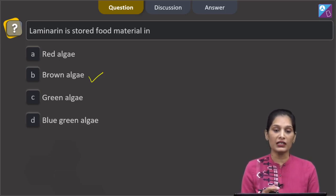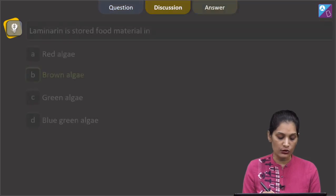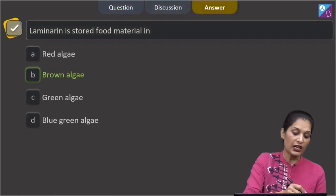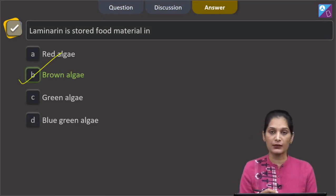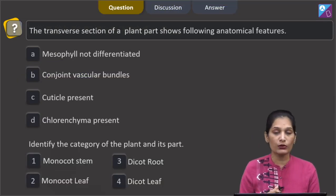it is the cyanophycean starch. So laminarin is stored food material in case of brown algae. So the correct option for the given question is B that is brown algae.